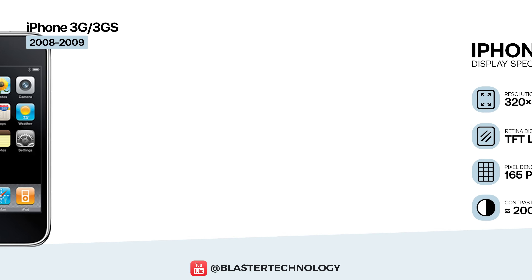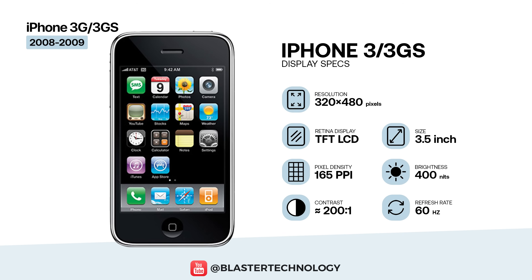The iPhone 3G and 3GS keep the exact same display specifications, using a 3.5-inch TFT LCD panel with a resolution of 320 x 480 pixels and roughly 165 ppi.